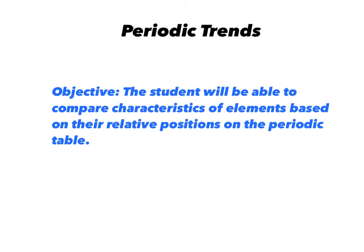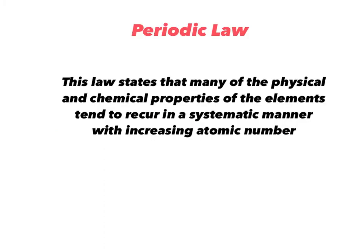Hello, this is Mr. Doro. Today we're going to be talking about periodic trends. By the end of this lesson, I'd like you to be able to look at the periodic table, and based on the positions of some elements, compare some characteristics about their physical and chemical properties. One of the first things that you need to know is the periodic law. It states that physical and chemical properties will recur in a systematic manner when elements are placed in order of increasing atomic number. And that's what Mendeleev used in order to put together our modern periodic table.